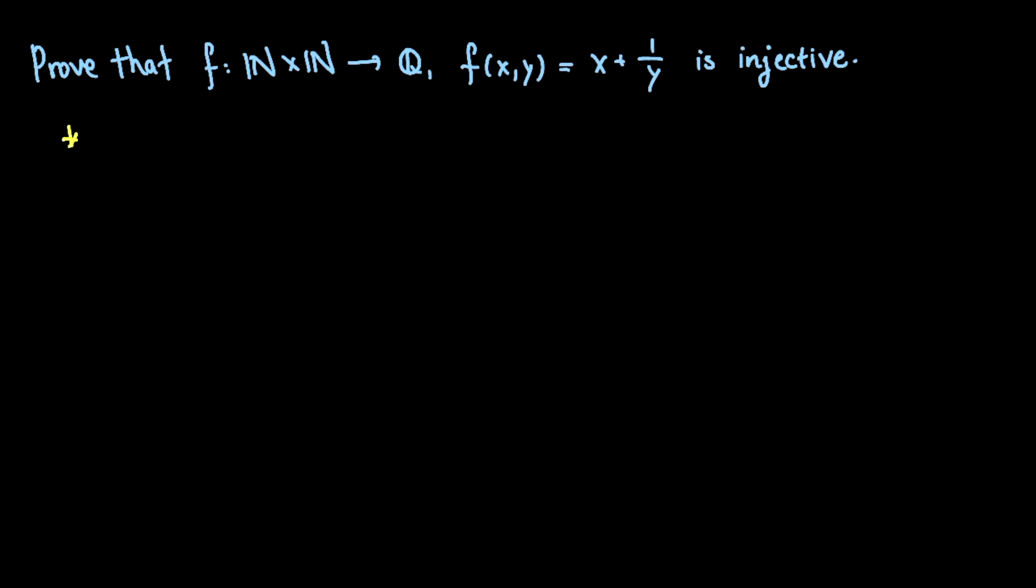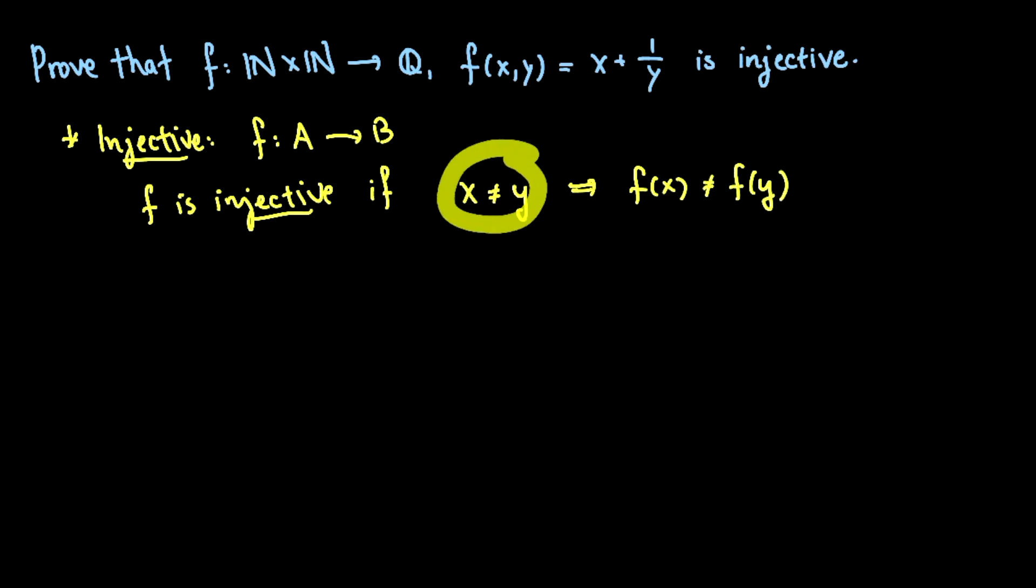Remember what the definition of injective function is. So if I have a function f from a set a to a set b, then f is injective. What that means is that no two different inputs go to the same output. So if whenever I have two different inputs, let's say x and y, then f of x is different from f of y.